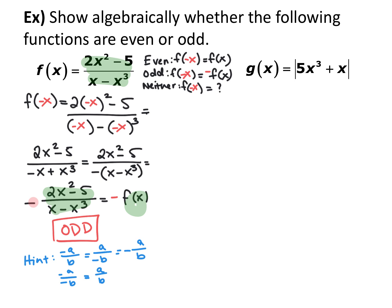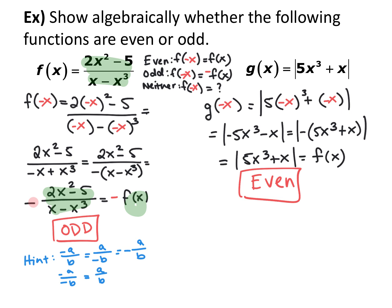For g(x), replace x with -x and simplify: (-x)³ = -x³, giving -5x³, and -x gives minus x. Factor out the negative to get the absolute value of [-( 5x³ + x)]. Using the absolute value rule — |−a| = |a| — this equals the absolute value of (5x³ + x), which is exactly the original function. So g(-x) = g(x), meaning it's even. Without the absolute value bars, it would have been odd. If signs were mixed — like 5x³ - x — it would be neither.